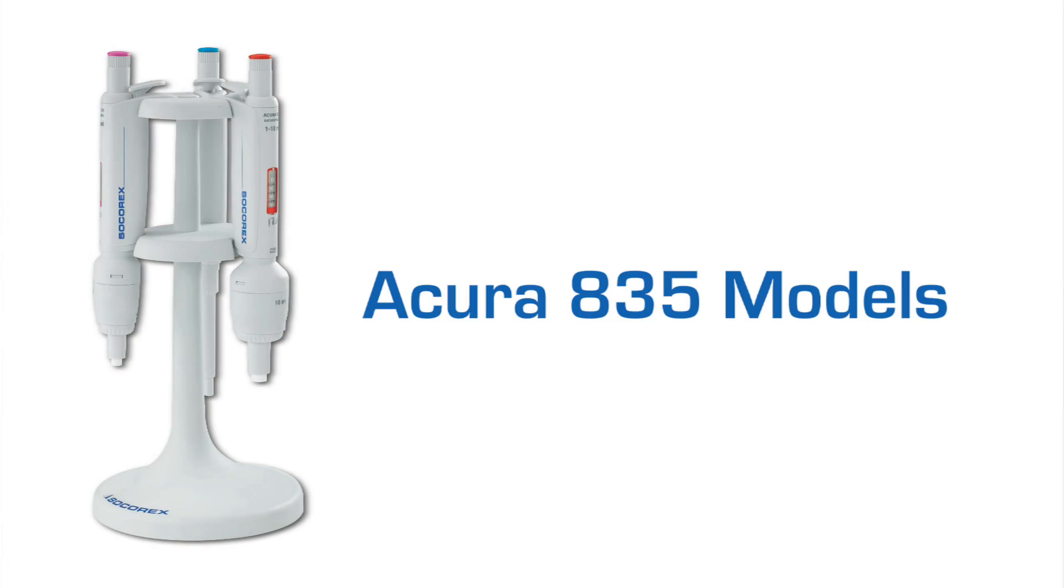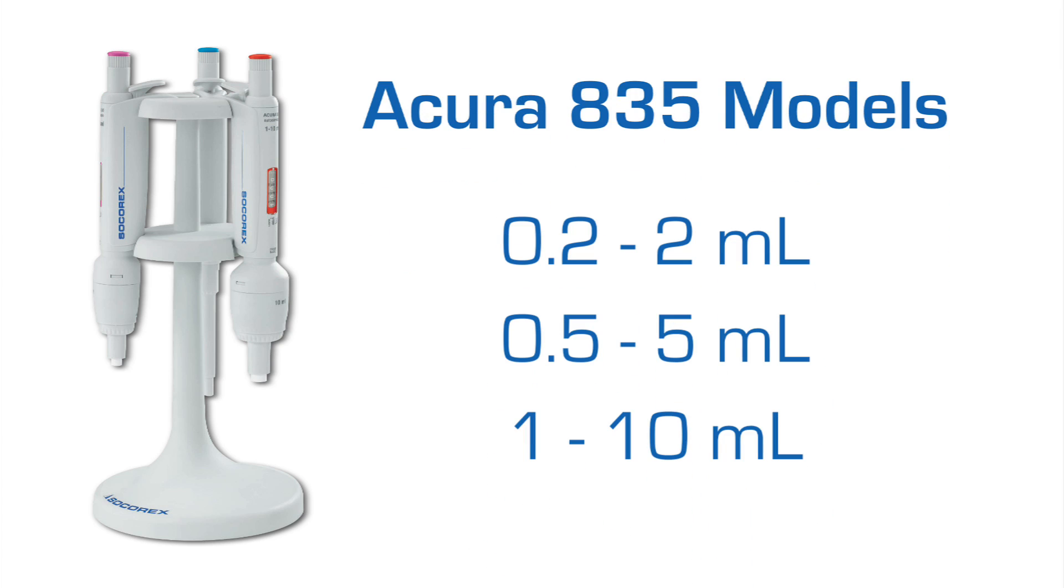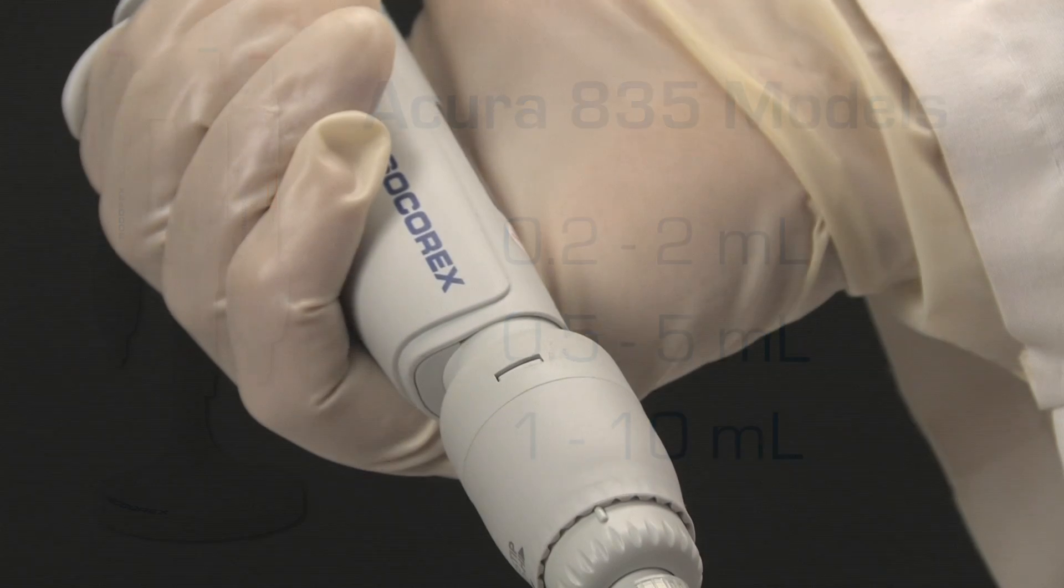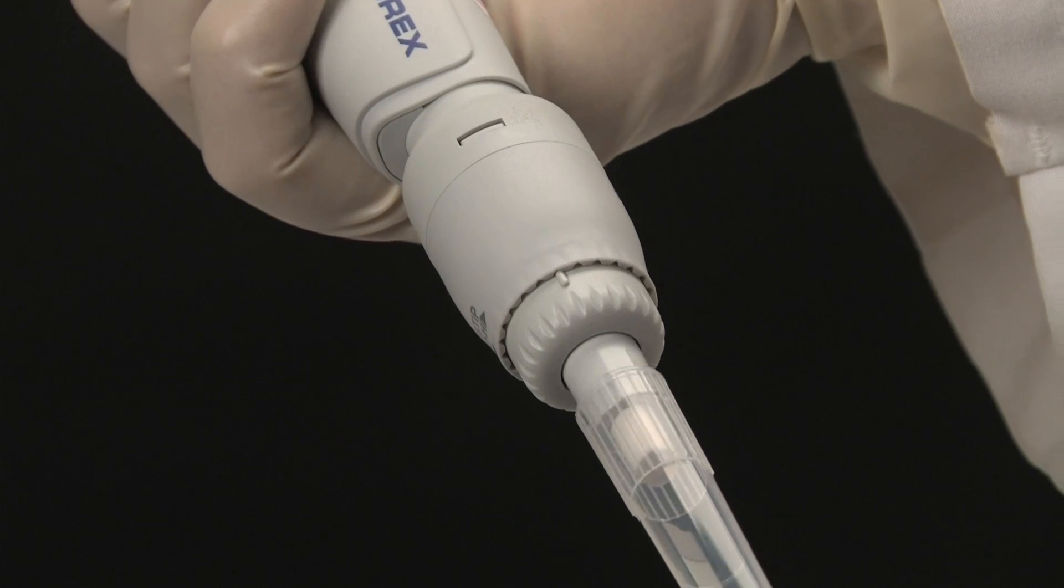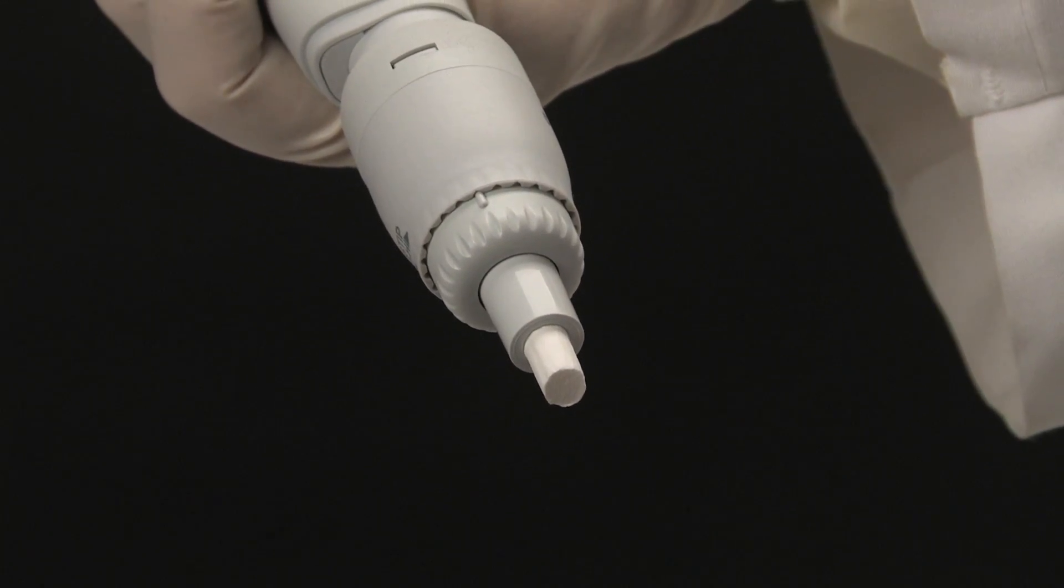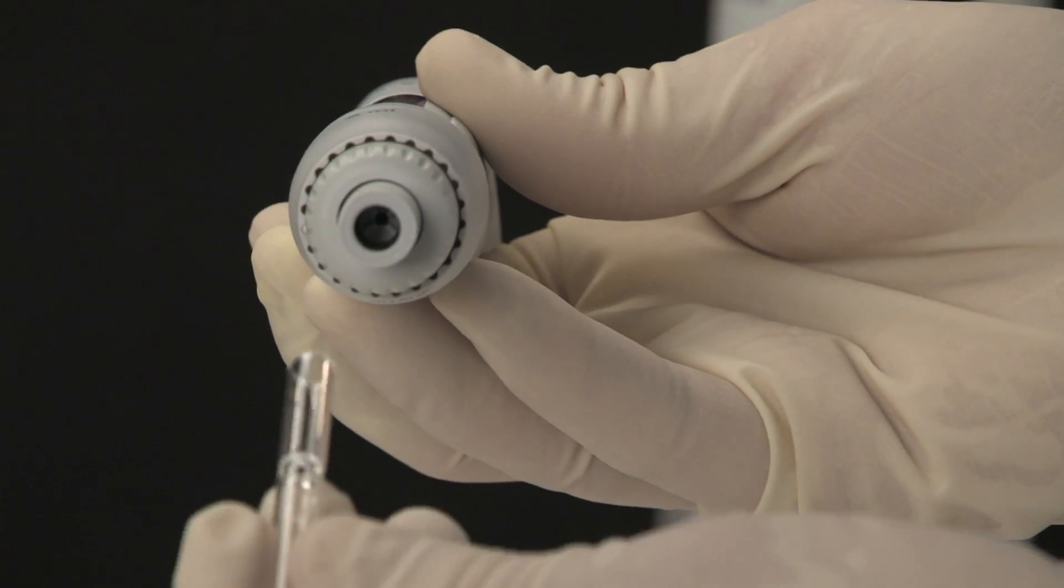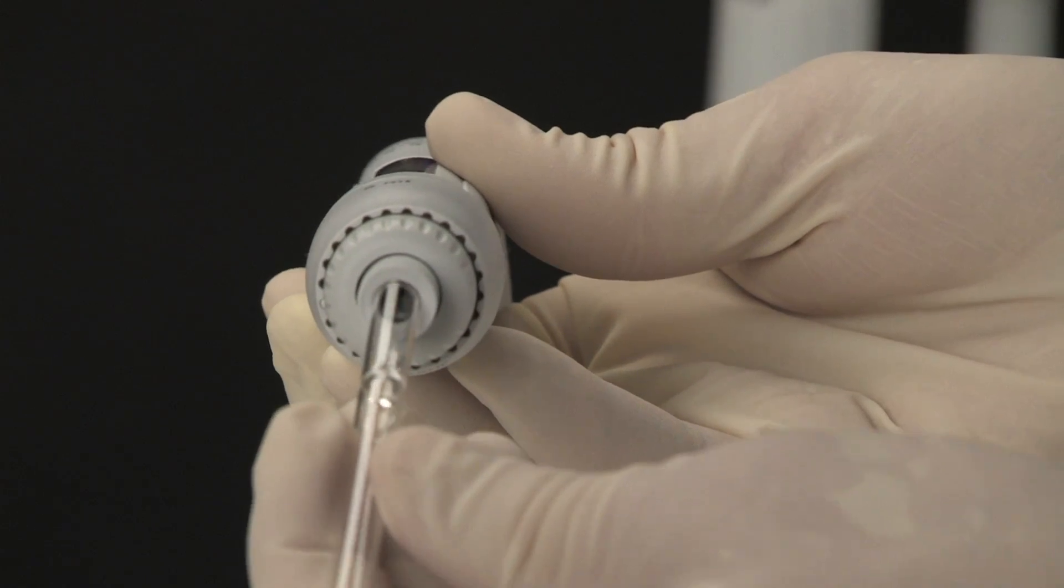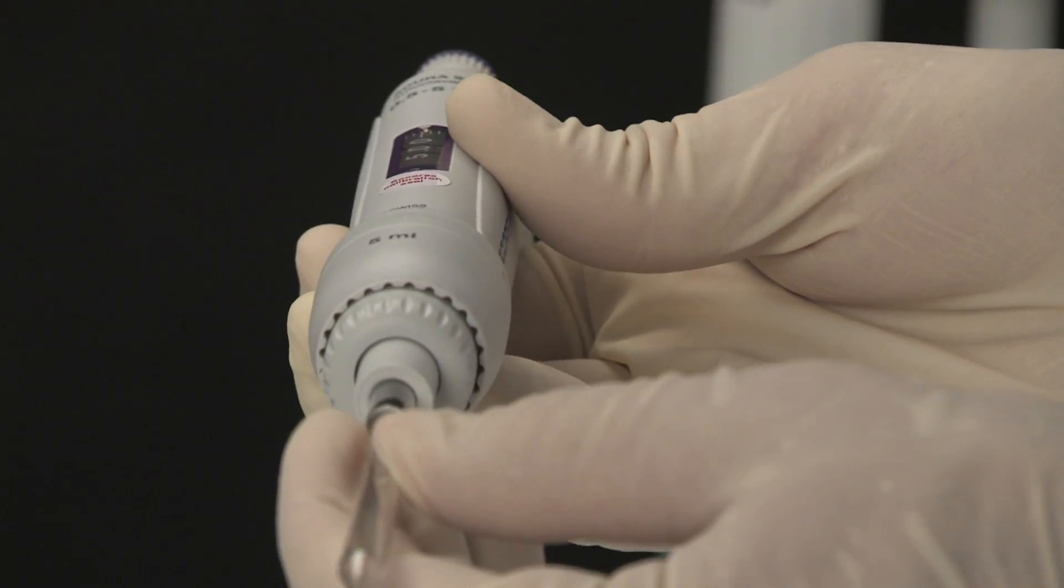The Acura Manual 835, which is offered in three sizes for larger samples, can accommodate nozzle filters for added protection against liquid fill and contamination. An optional adapter nozzle allows for the use of Pasteur pipettes on the 2 and 5 milliliter models.